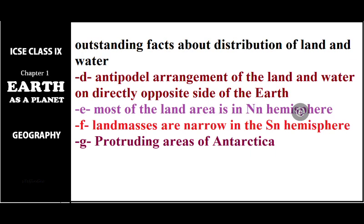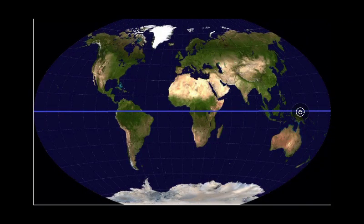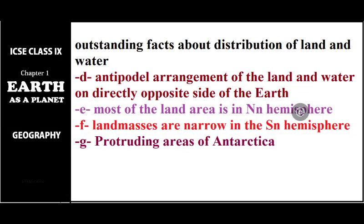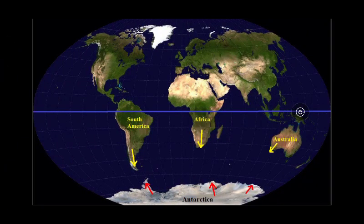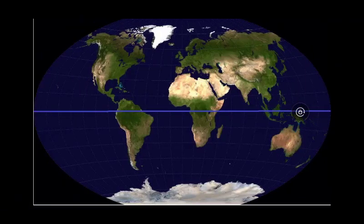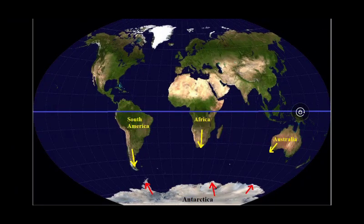If you look at the land masses in the southern hemisphere — South America, Africa, and Australia — all of them have a protruding point directed downward, with the tip pointing southward. Antarctica also has a similar projection from the opposite side. From the map, you can see that the equator divides the hemispheres, and the southern hemisphere has far less land — about 15 times more water than land.